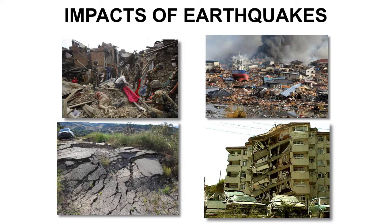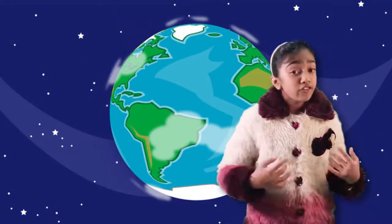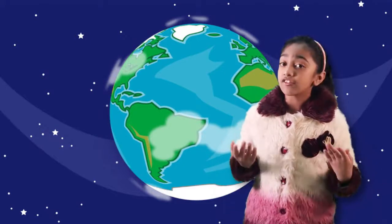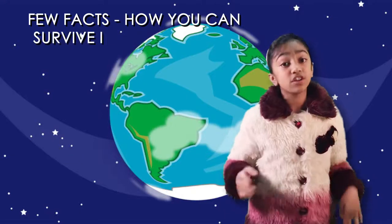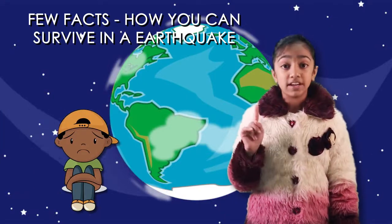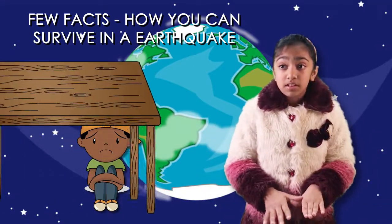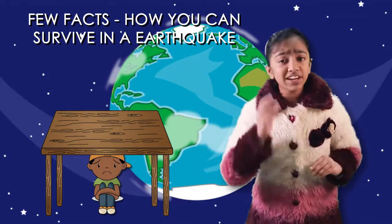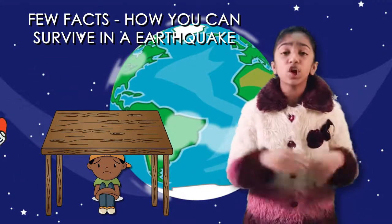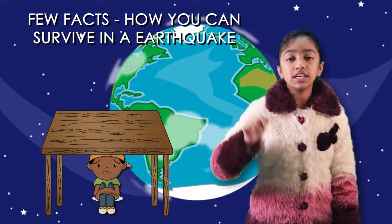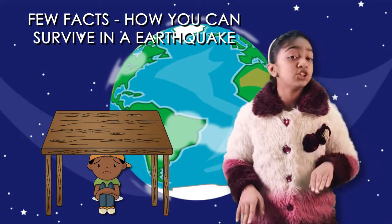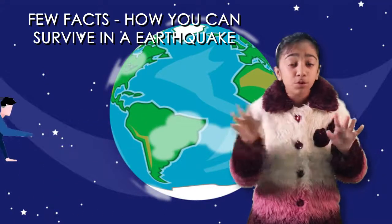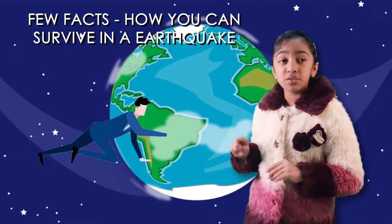So if an earthquake comes to your place, here are a few tips on how to survive. Number one: hide under a table. Tables are made of wood and are heavy, so if anything falls on them you won't get hurt. The best idea is to go under a table or a wooden chair. Second: crawl to a nice little corner of your house and stick to it until the earthquake is over.